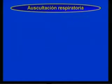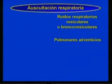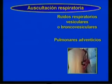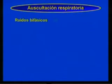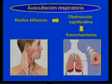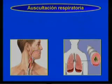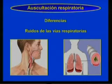Los ruidos respiratorios vesiculares o broncovesiculares y pulmonares adventicios tienen las mismas características de los adultos, con la excepción de que pueden ser más difíciles de distinguir en lactantes y muchas veces se presentan juntos. Los ruidos bifásicos indican una obstrucción significativa por estrechamiento de las vías respiratorias intra y extratorácicas. Es importante que estudien las diferencias entre los ruidos de las vías respiratorias superiores e inferiores a través del cuadro comparativo que aparece en su libro de texto.